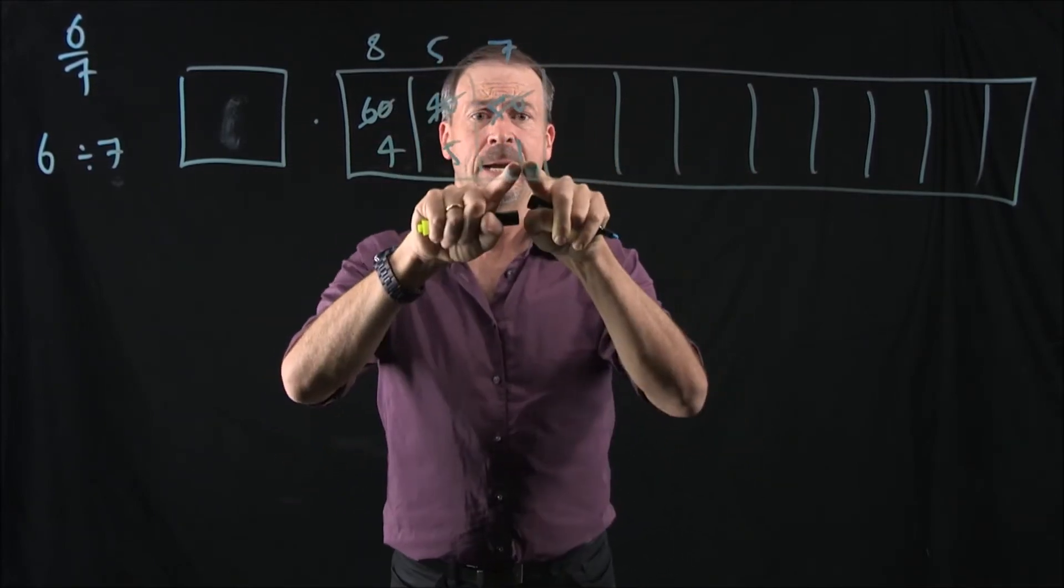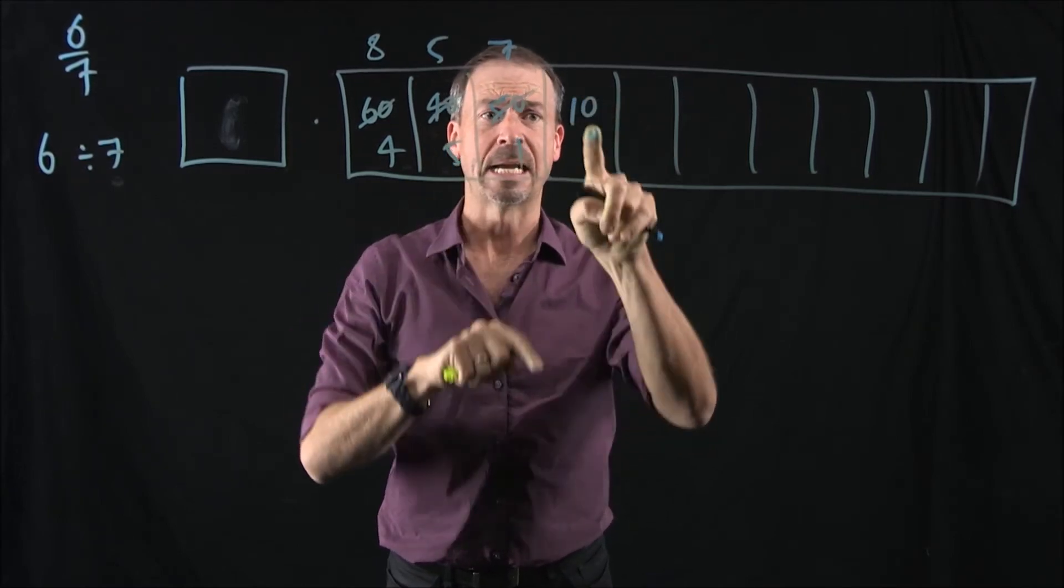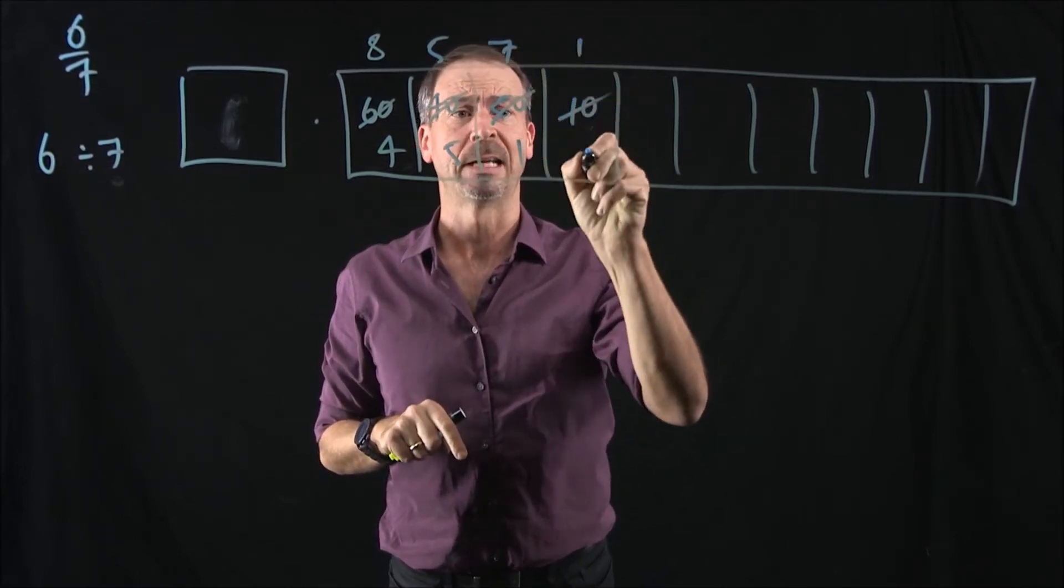Okay, I'm still going. No 7s there, but it's unexplode makes 10 dots. Any 7s in there? Yep. One group of 7, leaving 3 behind.